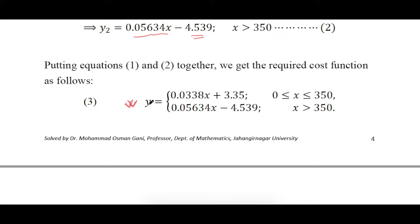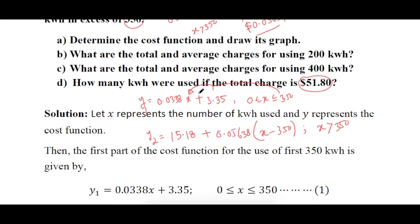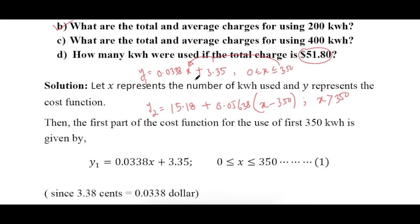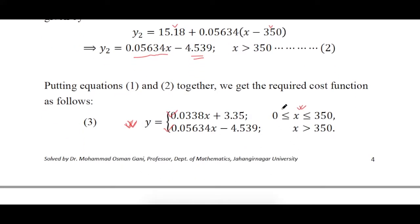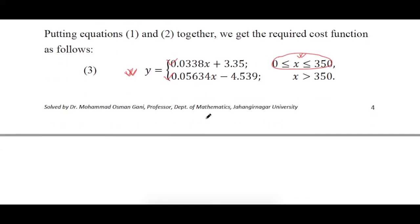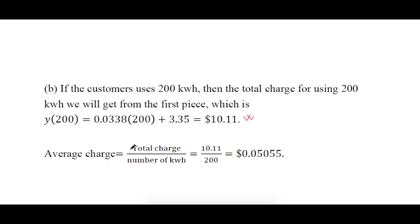Using this cost function you can calculate the total cost for any unit within the respective range. For example, to calculate the total and average charge for using 200 kilowatt hours — since 200 is within the first range — you substitute x = 200 into the first equation. The total cost will be that amount, and the average cost is total charge divided by number of units.